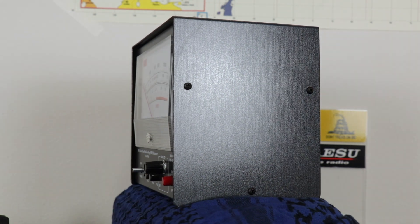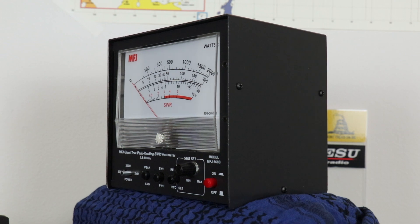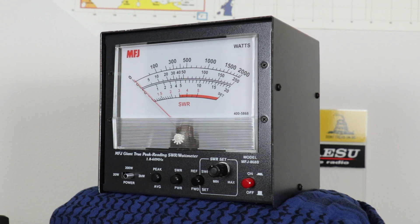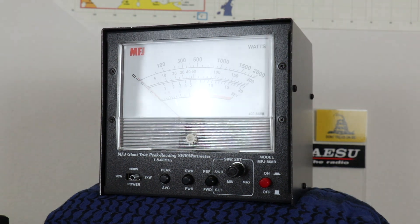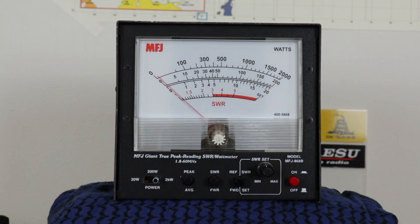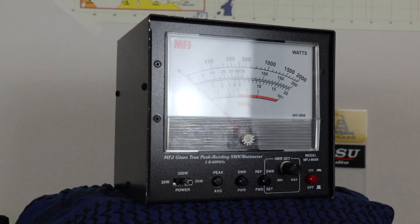The MFJ868B has a frequency range between 1.8 to 60 MHz, measures forward and reflected power, peak and average power, as well as SWR. It has an input-output impedance of 50 ohms, is backlit, the screen is 6.5 inches when measured diagonally, and can handle up to 2,000 watts.